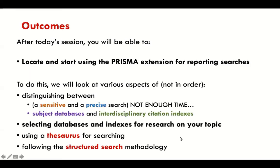We will be starting to use the PRISMA extension for searches — for reporting searches. That's going to be the focus of our discussion today. Just as yesterday we used the protocol documents to contextualize why we need to do things like prior searches, today we will really use the PRISMA extension to see which parts need to be reported, and why and how to do it. We are going to do a little bit of a review of sensitive and precise searching, focused on why you need to be doing this.